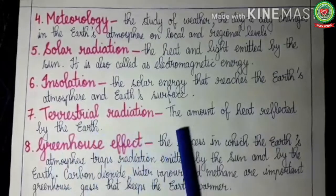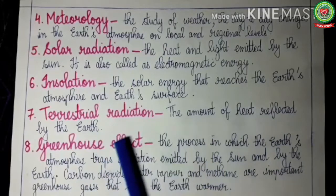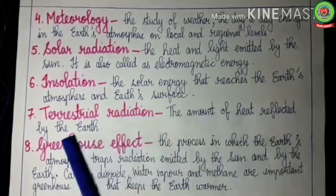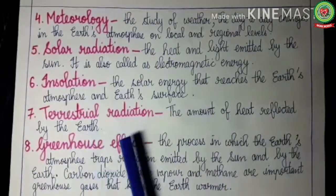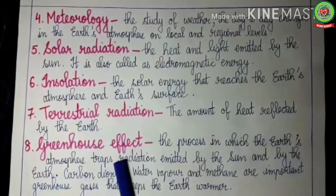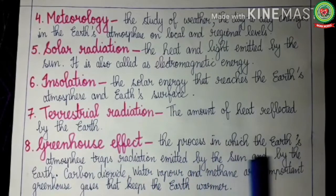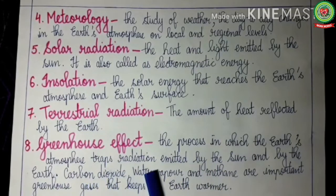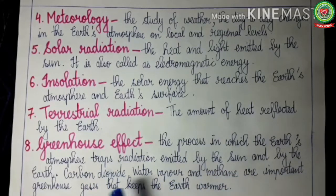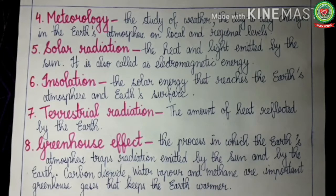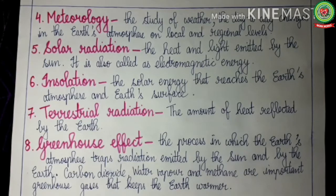Terrestrial radiation: the amount of heat reflected by the earth, mostly at night, is called terrestrial radiation. Greenhouse effect: the process in which the earth's atmosphere traps radiation emitted by the sun and by the earth. Carbon dioxide, water vapor, and methane are some important greenhouse gases. These gases keep the earth warmer by trapping the heat coming from the sun and radiated back by the earth.